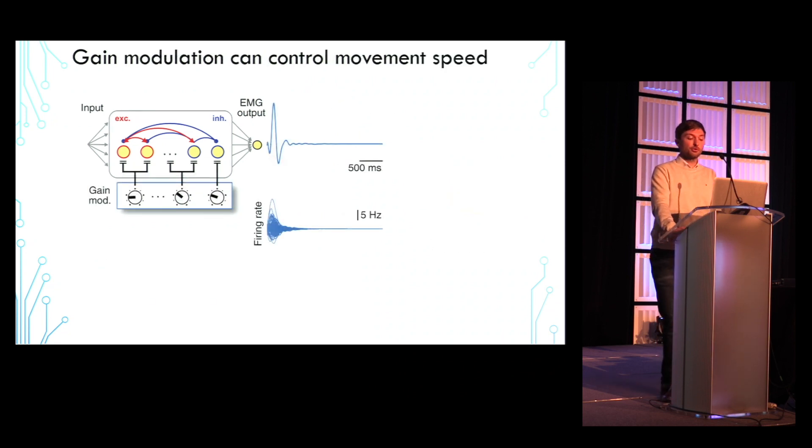So far, we have seen that simple group-based gain modulation enables control of muscle activity lasting for a fixed duration approximately half a second. We next investigated if gain changes are able to control the speed of an intended movement.